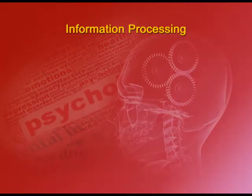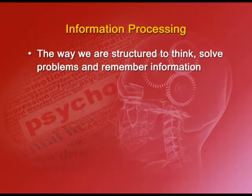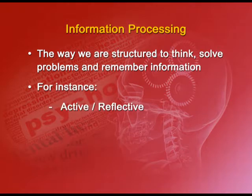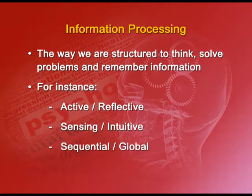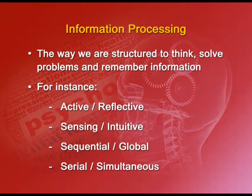The second component is information processing — the ways that we structure information and how those structures are employed to think, solve problems, and remember information. These can be active or reflective, sensing or intuitive, sequential or global, serial or simultaneous. Any information given to you — any chapter you read — you would actually learn it differently from other people in your class. For instance, some people go through part one, then the concluding part, and then parts two, three, and four. Others go in sequence: one, two, three, and so on. When reading a novel, some read the first and last page first; others follow a strict sequence. For cooking, some prepare all ingredients beforehand and proceed step by step, while others retrieve ingredients as needed during the process.